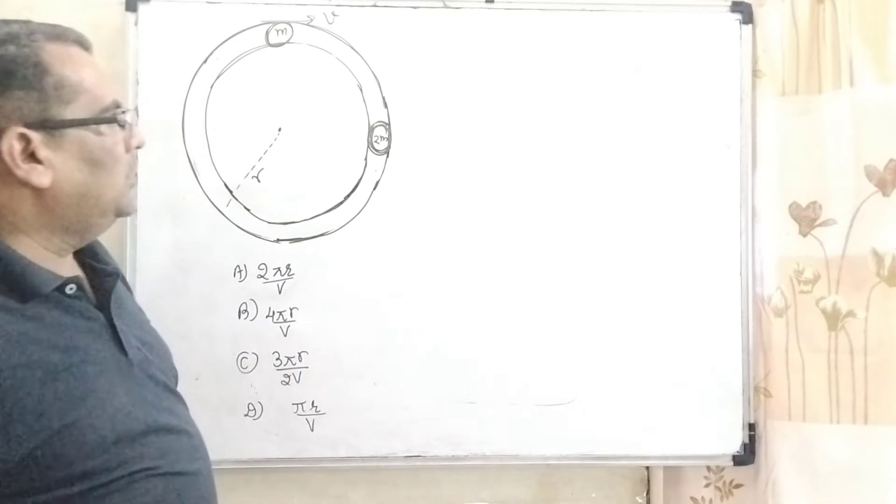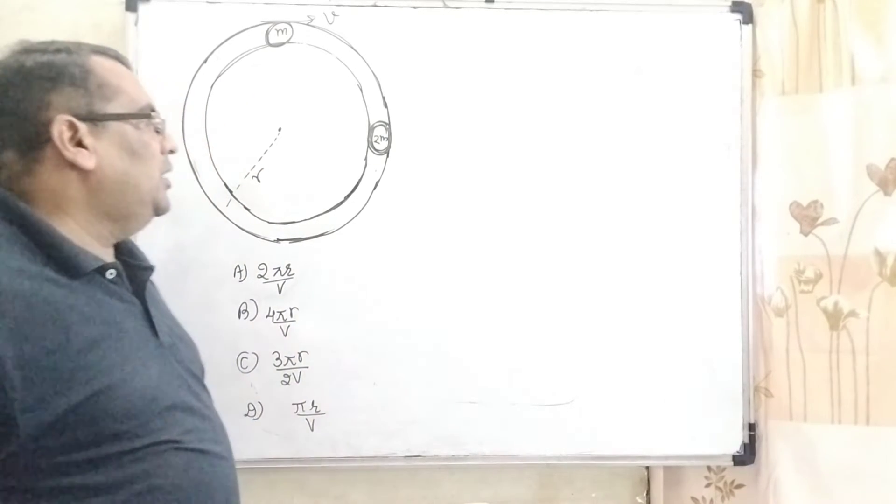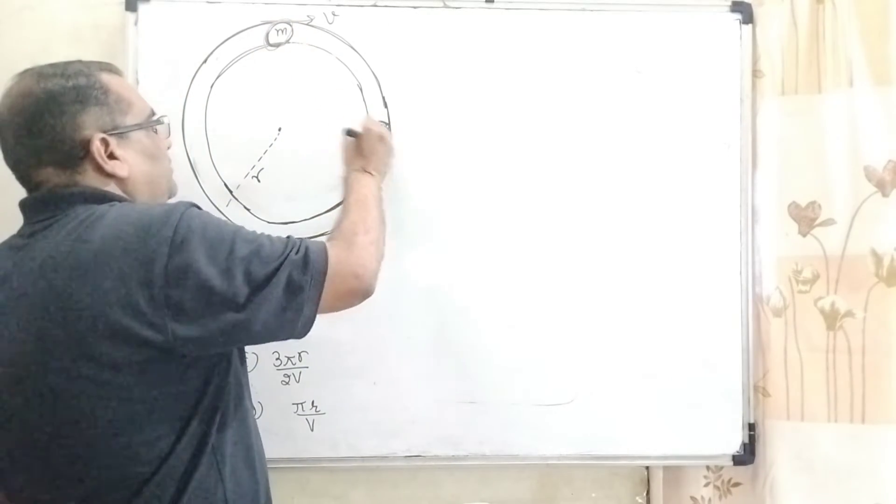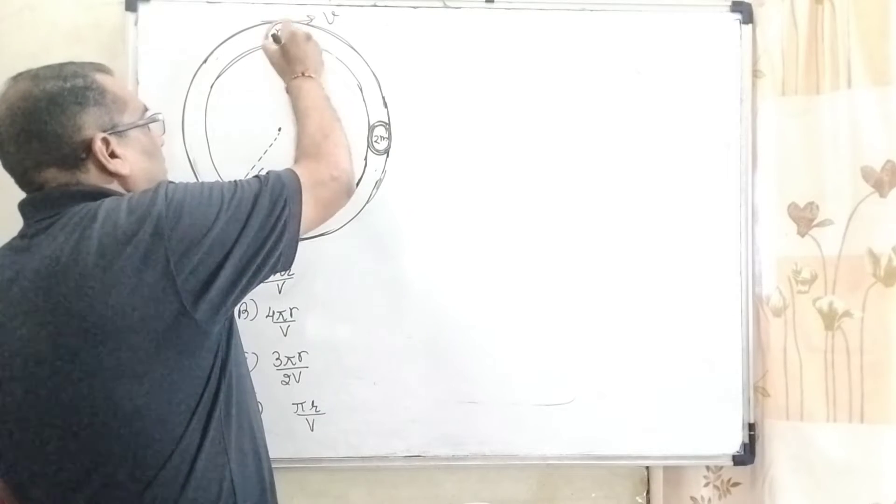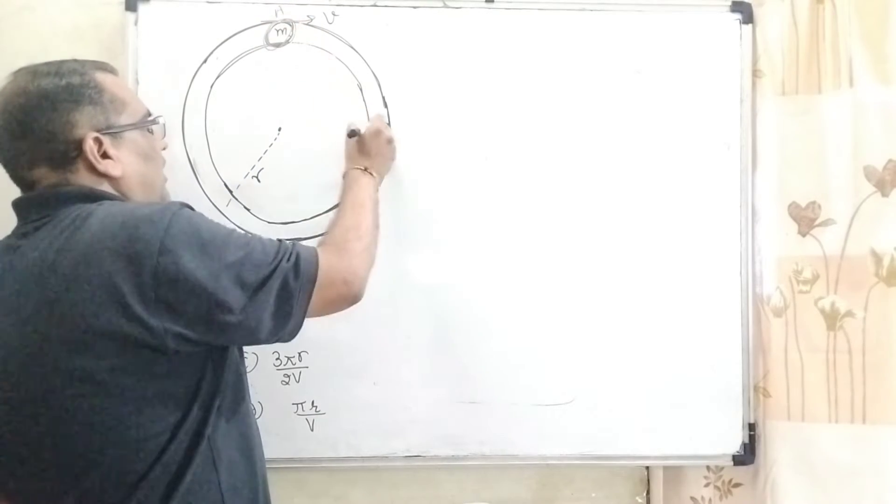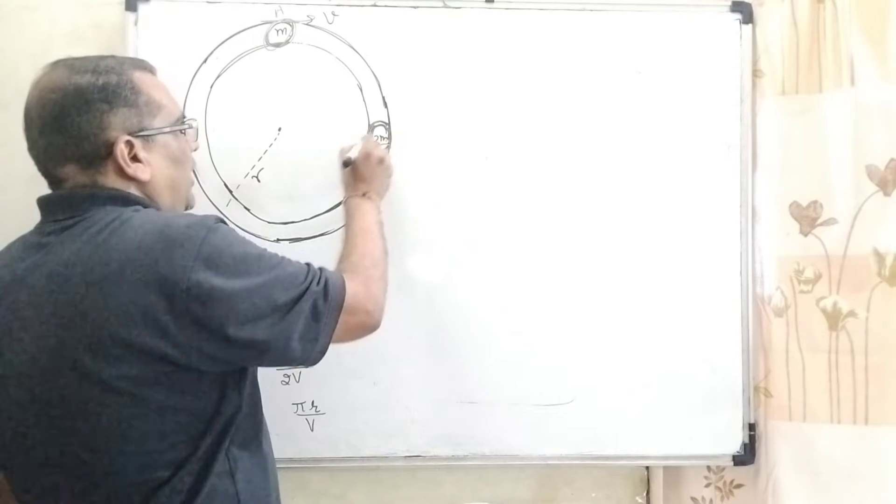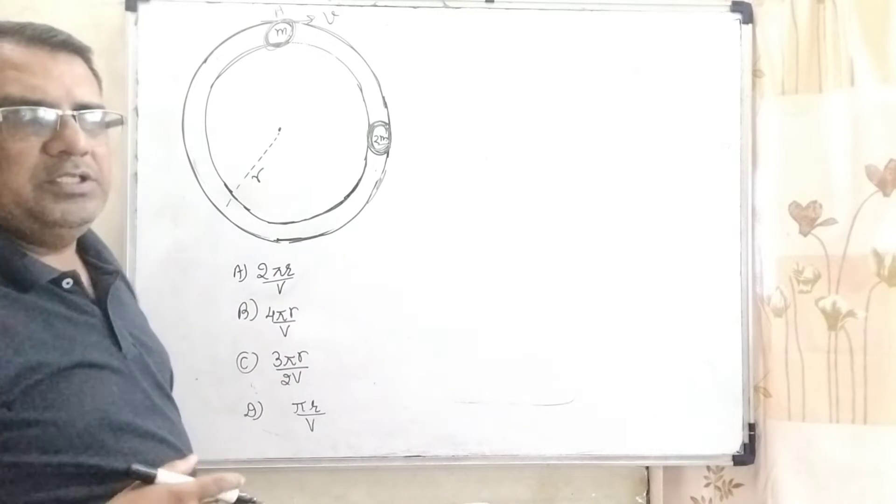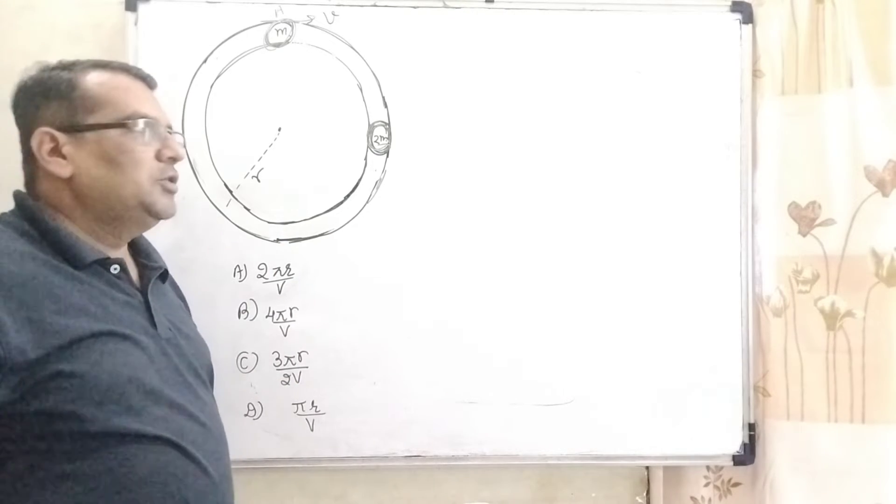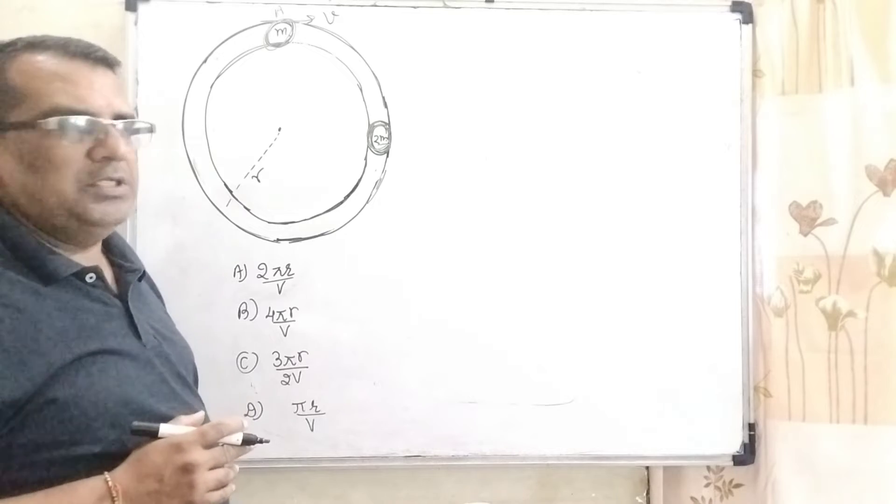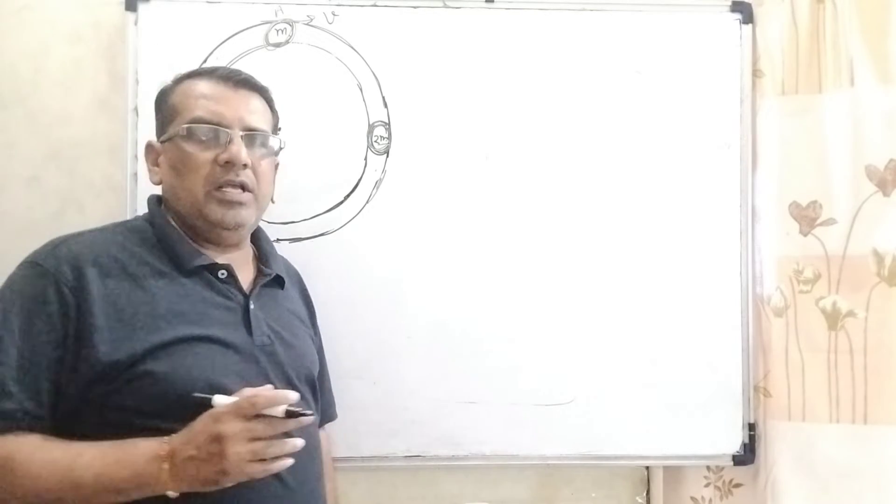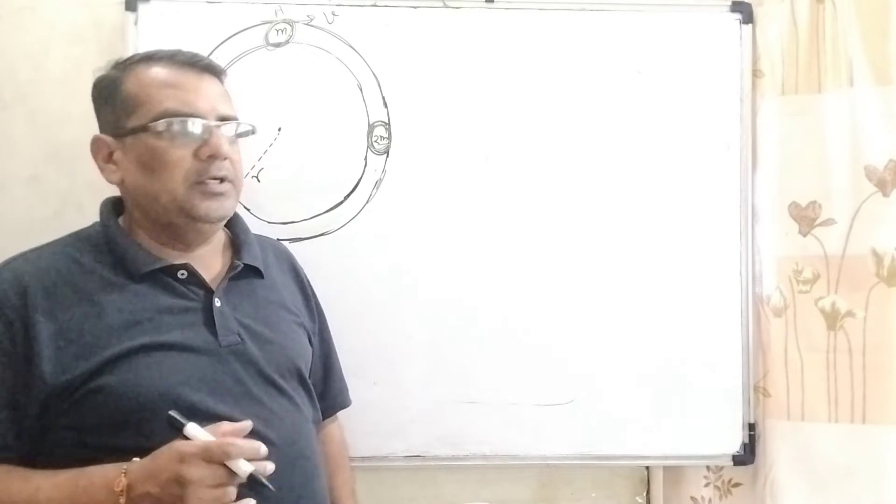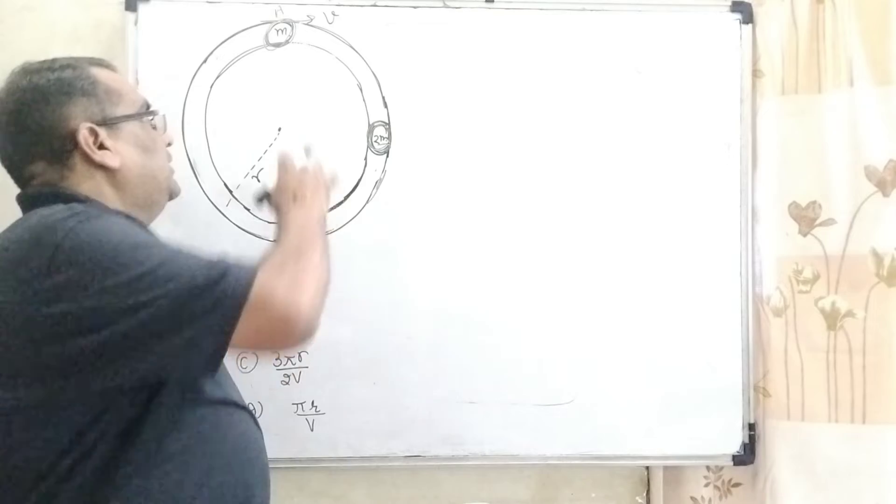This question is based on elastic collision. Here we have given a track, or we can say, in the tube. Here the two spherical objects which are moving. And this first spherical object having mass m collides with 2m spherical object. And we have to find out the time of the second collision. So this question is based on elastic collision. What is the meaning of elastic collision? In elastic collision, momentum and energy both are conserved.